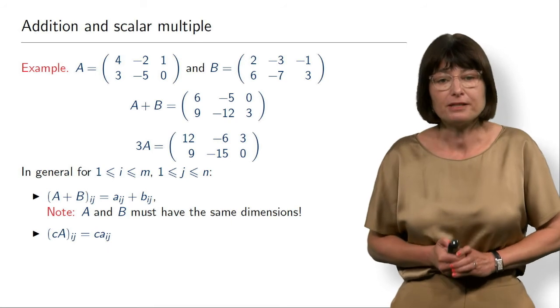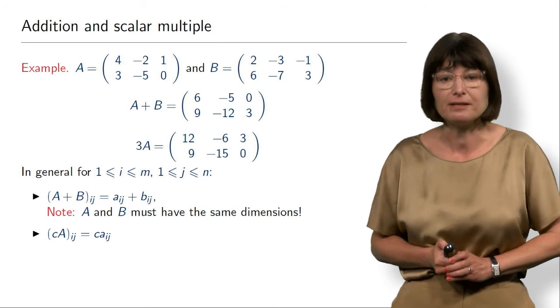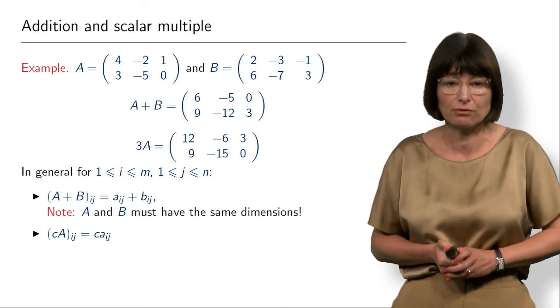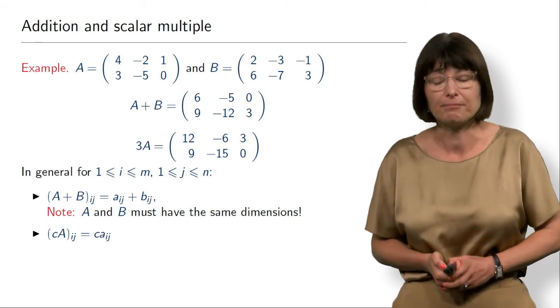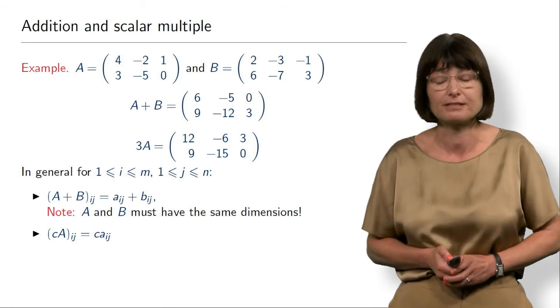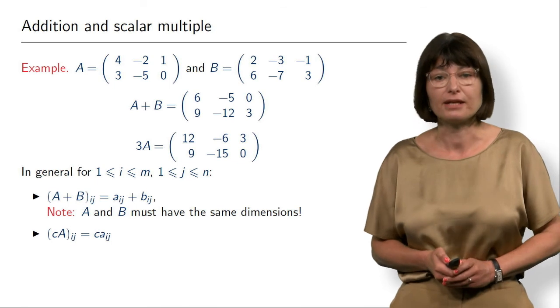And by the way, note that for addition of two matrices, A plus B must be of the same dimension—they have the same number of rows and the same number of columns. Otherwise, we simply cannot add them because we cannot define all the elements of the resulting matrix. So only matrices of the same dimensions can be added together.